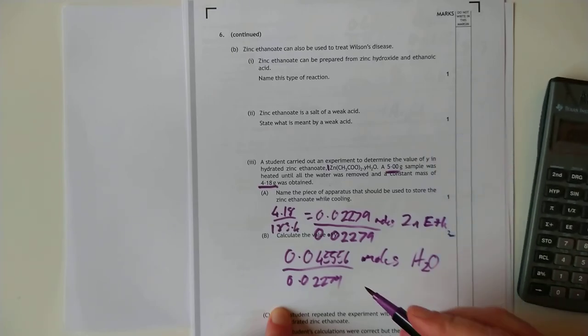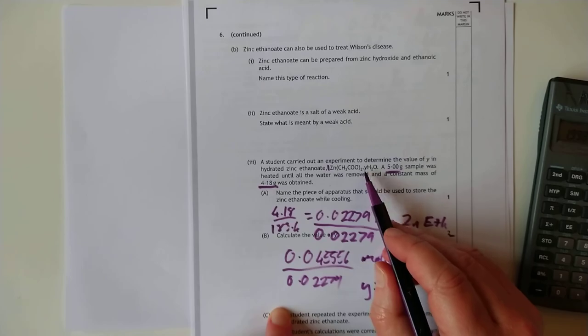Gives us an answer of 2, more or less, 1.999980. So basically, y equals 2. So the correct formula is zinc ethanoate with 0.2 H2O. So that's a volatilization.